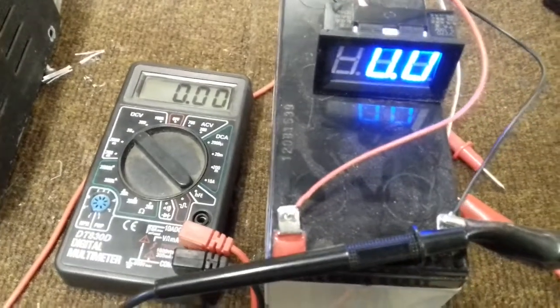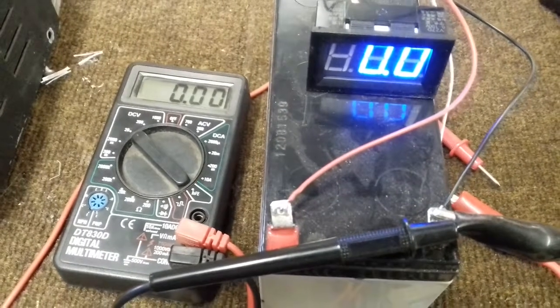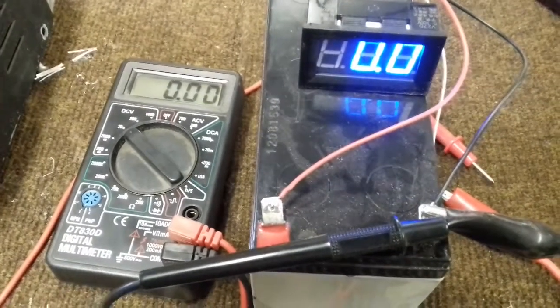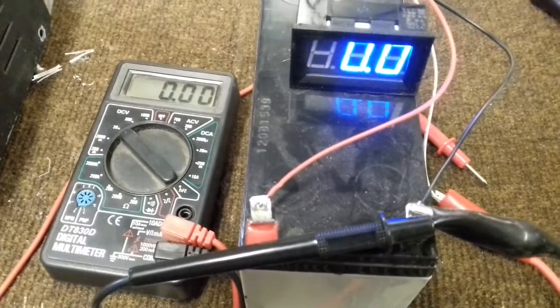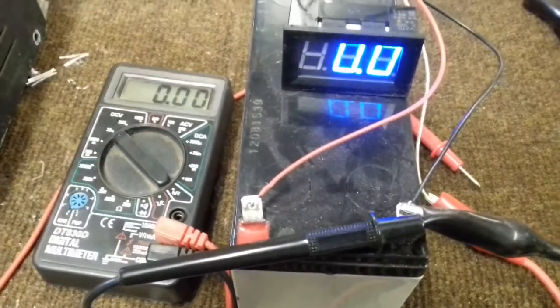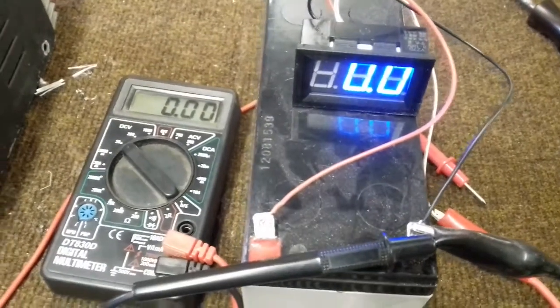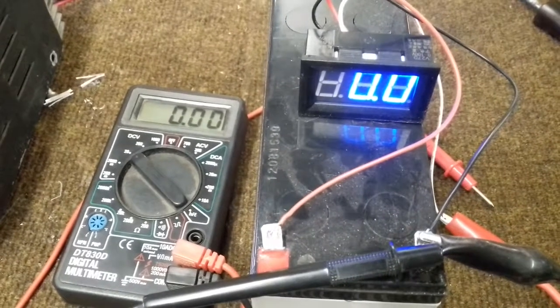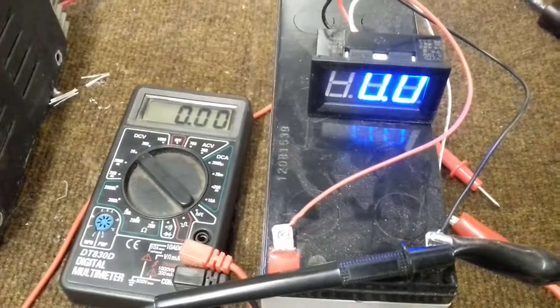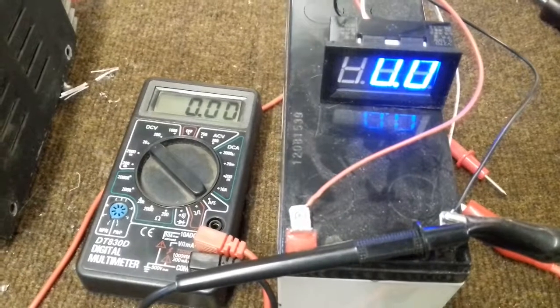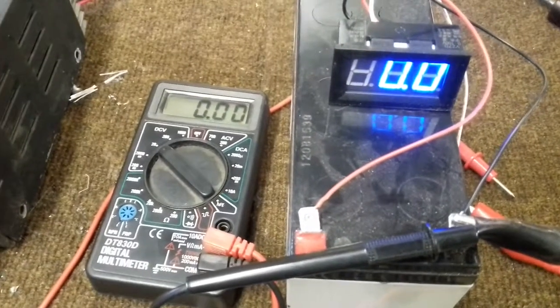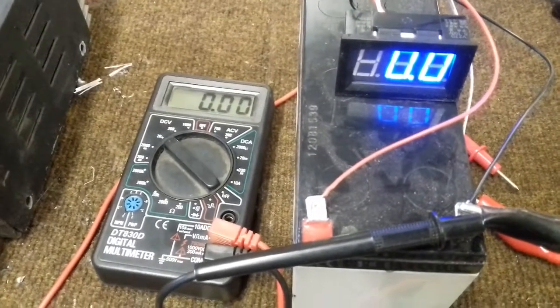With the panel meter connected in parallel with the multimeter, we can actually see the accuracy. I'm going to switch the power supply on, and the panel meter will go to about 1.4 volts as my power supply does not go down to 0 volts.